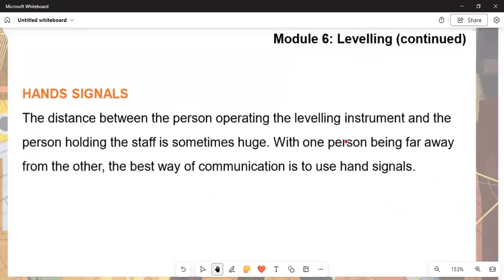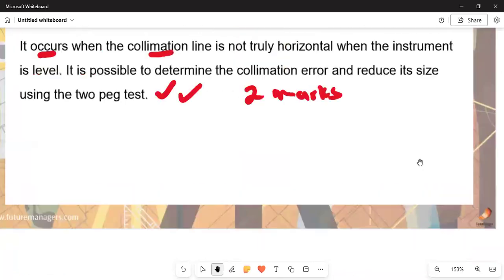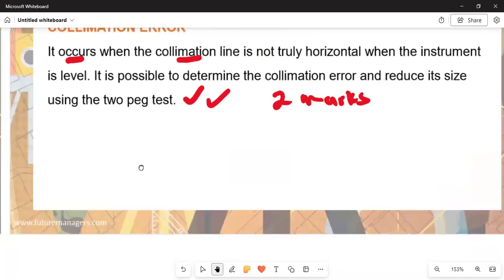Let us understand that we can talk now about the hand signals. This determines the distance between the person operating the level instrument and the person holding the staff is sometimes huge, with one person being far away from the other. The best way of communication is to use the hand signals. We can see that we have accepted the norm and standard of other sign languages.